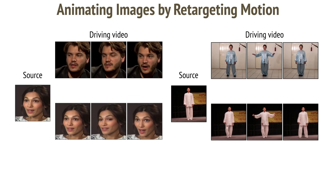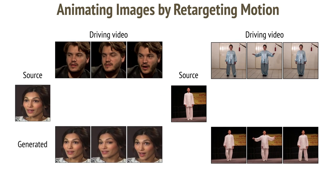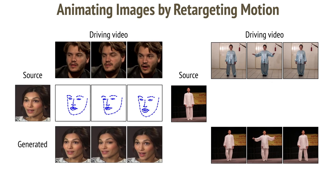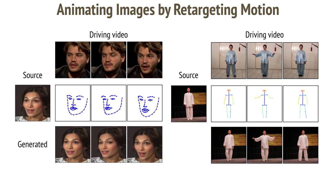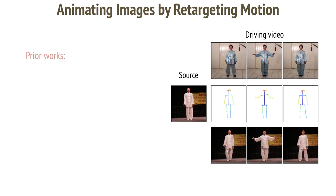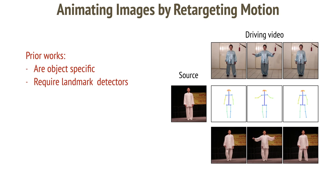Prior works approach the problem by using object-specific priors. This unfortunately works only for objects for which such priors are available, such as human bodies or faces. This is, however, often not true in reality. Such methods also require a pre-trained landmark detector, are object-specific, and impose a very strong prior that transfers appearance along with the motion.